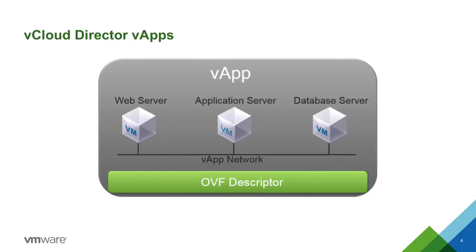In vCloud Director, a vApp is a collection of interrelated virtual machines. You can also think of a vApp as a package of IT services or a container for your multi-VM application. In vCloud Director, you can create a vApp from scratch or download a pre-packaged vApp template or an OVA from a trusted vendor.